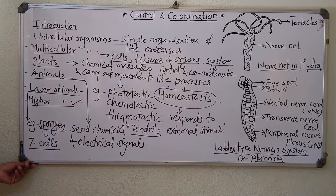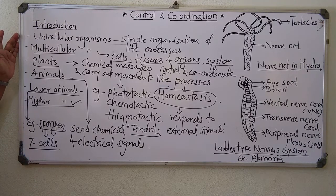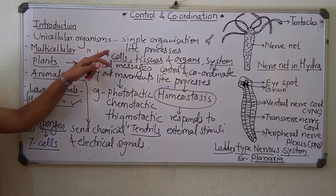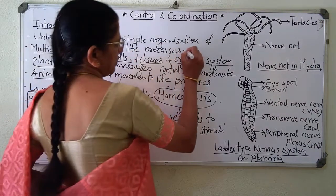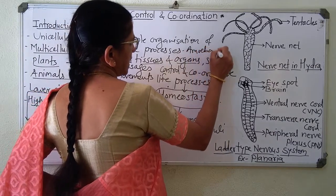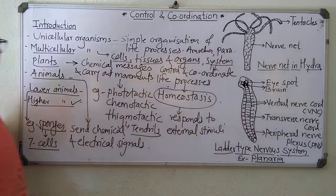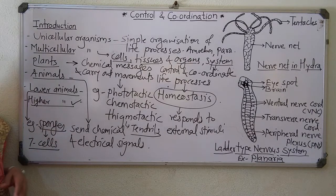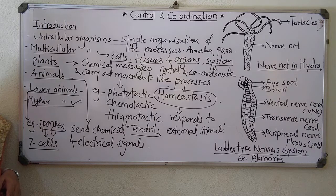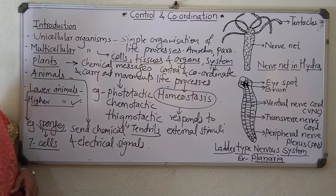So that is about the introduction. Unicellular organisms have simple organization of life processes — for example, amoeba and paramecium are made up of only one cell, so all life processes are performed by that single cell with no coordination. In multicellular organisms, there is cellular organization — cells, tissues, organs, and systems — and this system controls and coordinates life processes to maintain homeostasis.